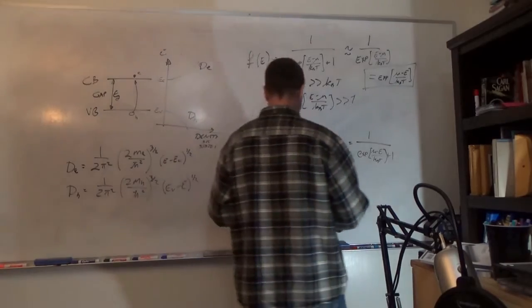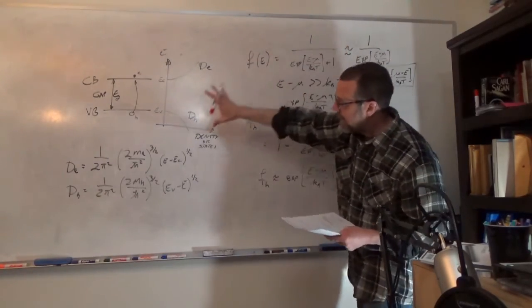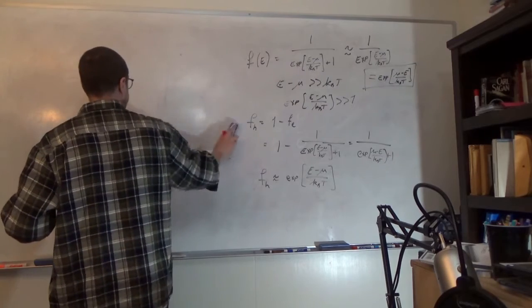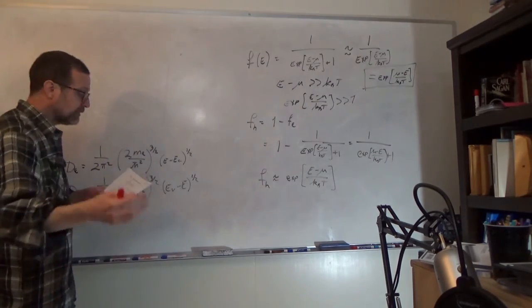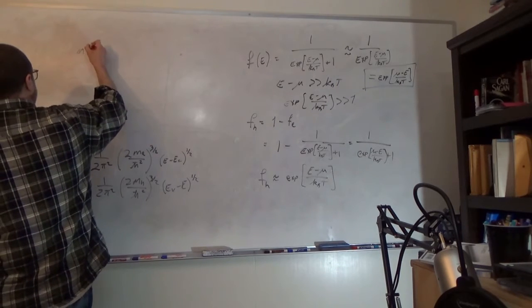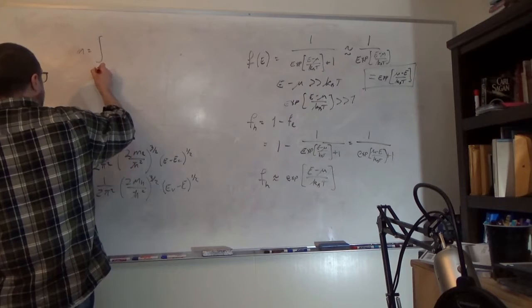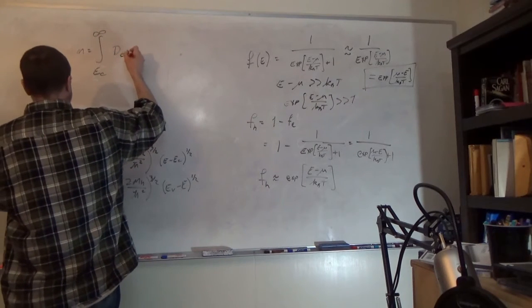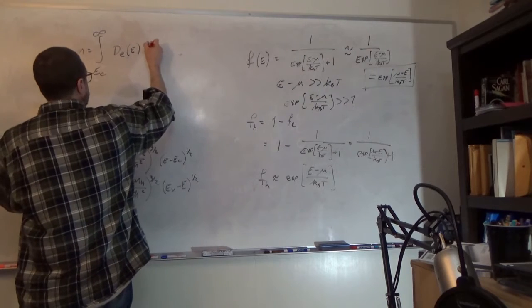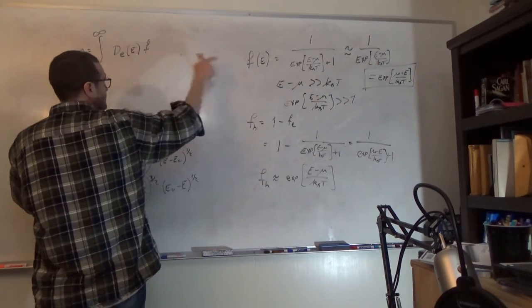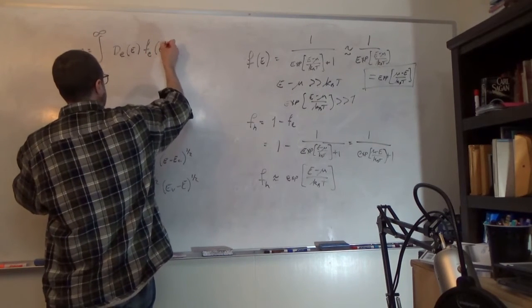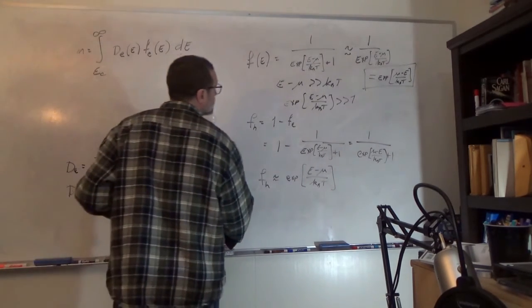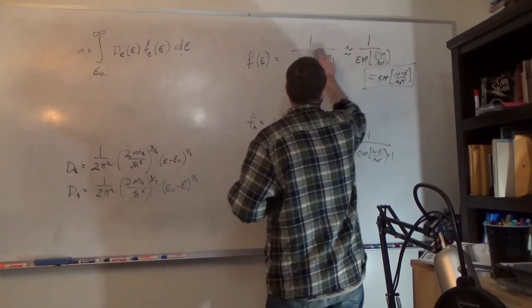If we have our Fermi-Dirac distribution and our density of states, we can determine the concentration of electrons — and we need that in order to determine the conductivity. We can determine it by integrating from the conduction band edge up to infinity of the density of states of electrons times the distribution of electrons.